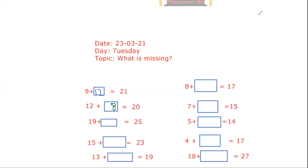19 count till 25, what comes after 19? 20, 21.